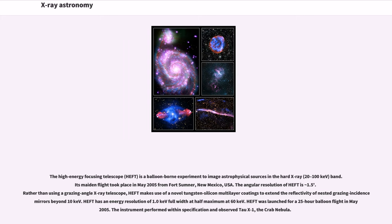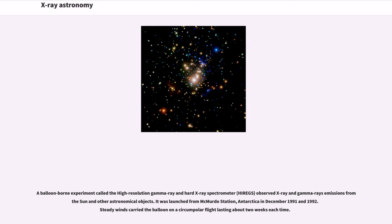HEFT makes use of novel tungsten silicon multi-layer coatings to extend the reflectivity of nested grazing incidence mirrors beyond 10 kilo electron volts. HEFT has an energy resolution of 1.0 kilo electron volts full width at half maximum at 60 kilo electron volts. The instrument performed within specification and observed Tau X-1, the Crab Nebula.